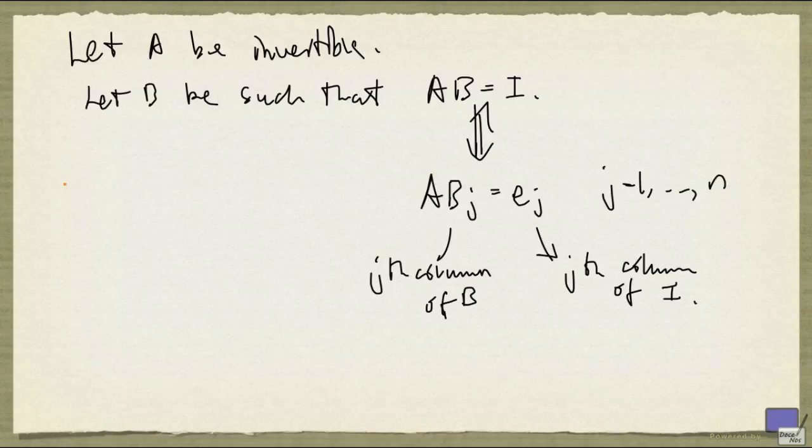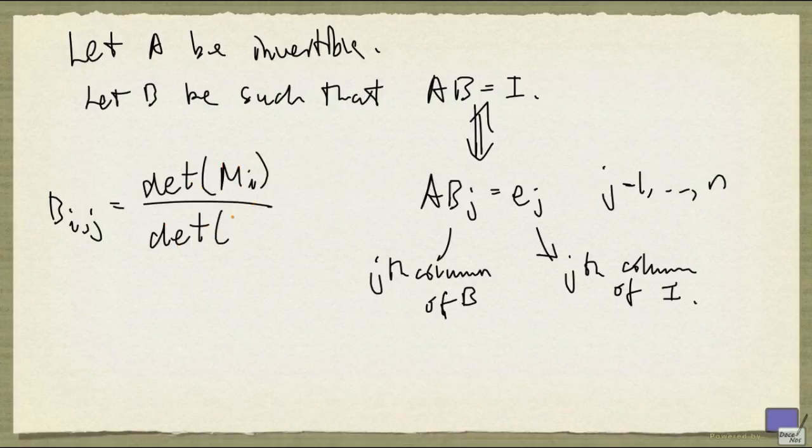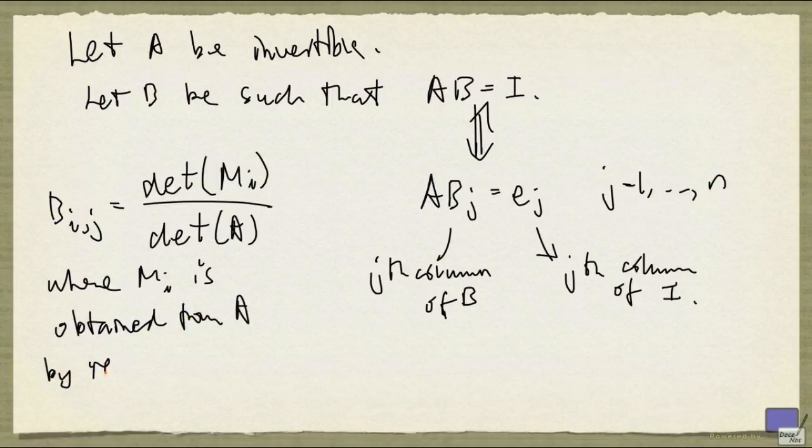By Cramer's rule, we can see that the ith component of Bj, which is of course Bij, is given by the determinant of Mi divided by the determinant of A, where Mi is obtained from A by replacing column i with Ej.